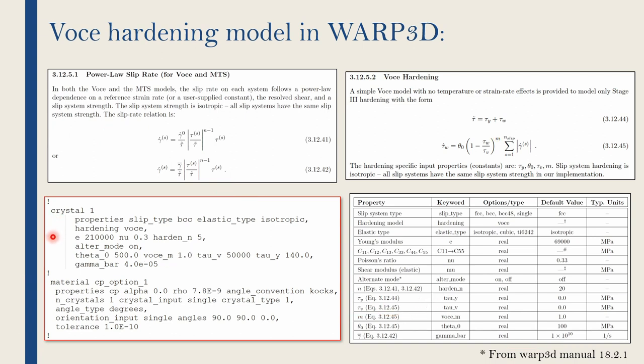Let's just quickly go over these keywords. First, you have to define crystal. In crystal properties, you have to define which type of crystal structure it has. In this case, it is BCC. We are using Voce hardening model. You can see Voce hardening model supports FCC, BCC and BCC48. It does not support HCP. Then elastic type, I am using isotropic. Hardening model is Voce. E is nothing but Young's modulus. Nu is Poisson's ratio. And then these parameters N, theta 0, M, tau V, tau Y and gamma bar. You can find all of them over here. And all of them come from these two equations.